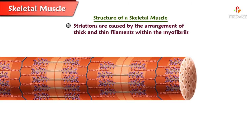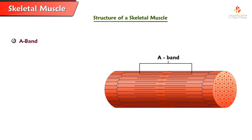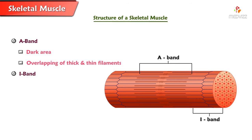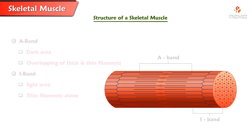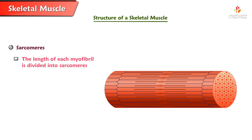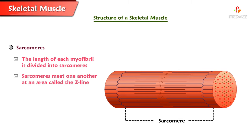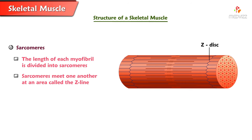Striations are caused by the arrangement of thick and thin filaments within the myofibrils. The A-band, also known as the dark area, is a region in which there is overlapping of thick and thin filaments. The I-band, also known as the light area, has thin filaments alone. The length of each myofibril is divided into sarcomeres, which meet one another at an area called a Z-line.